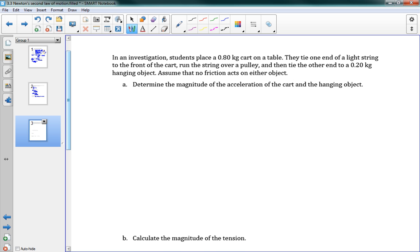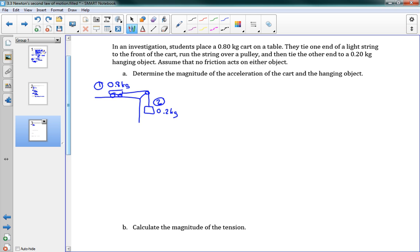So in this problem, it says in an investigation, students place a 0.80 kilogram cart on a table. They tie one end of a light string to the front of the cart. They run the string over a pulley and then tie the other end to a 0.2 kilogram hanging object. Assume that no friction acts on either object. First off, we've got to draw a picture of this situation here. So they say there's a cart on a table. There's a cart on a table. It says that there's a light string tied over a pulley. This is going to be our pulley. And the other end is tied to a hanging object. So this is our situation here. This cart has 0.8 kilograms of mass. This hanging object is 0.2 kilograms of mass. We'll call this object one and object two. I'm going to warn you right now. This is one of the trickier problems, actually, of this unit. This is a challenging problem. It's going to use everything that we've learned already, but we do need to be a bit creative. So follow along.